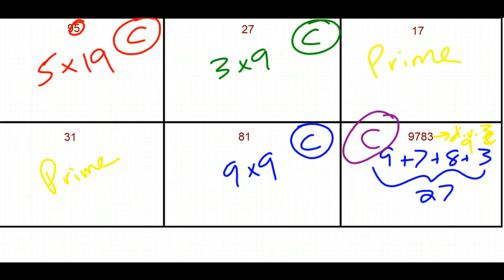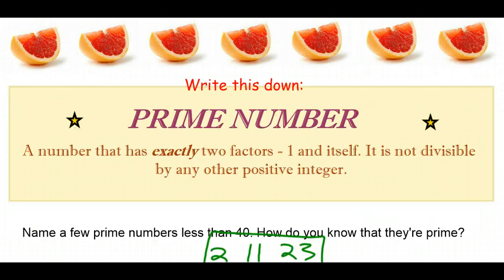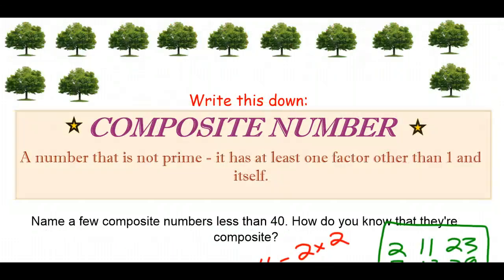As a review: a number that divides evenly into another number is called a factor. If a number has exactly two factors — one and itself — we call it prime. If it has any more factors than that, we call it composite.